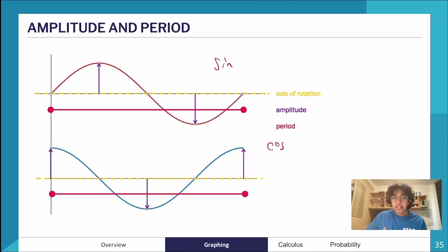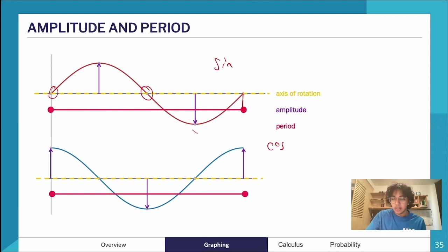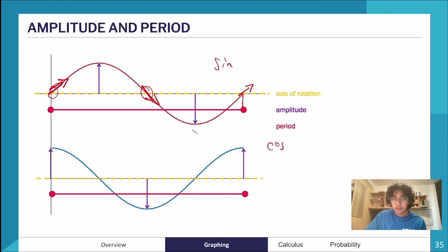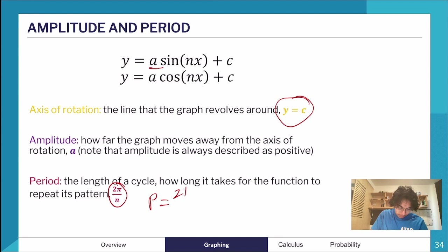A sine graph and cosine graph look almost identical — they're just translated versions of each other. The axis of rotation sits at the centre, the amplitude reaches above and below it, and the period is one full revolution where the graph's pattern completely repeats — including both value and direction of movement. The period is always 2π/n.